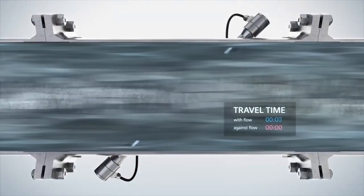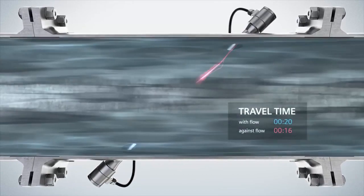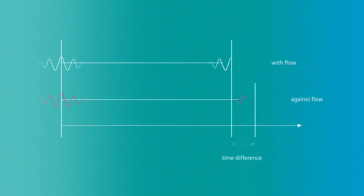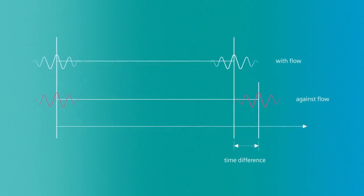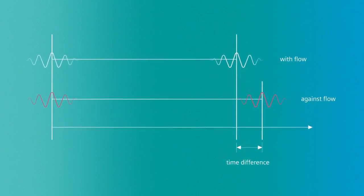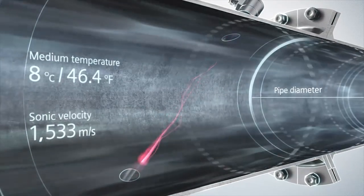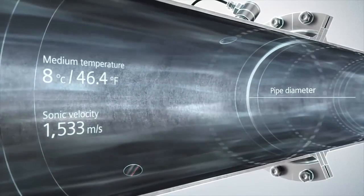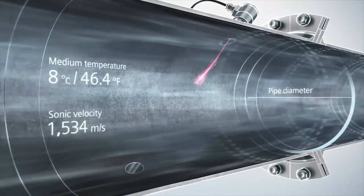When moving in the same direction as the flow, waves travel faster than waves traveling against the direction of the flow. The higher the flow velocity of the medium, the greater the difference between the two transit times. Combined with the known area inside the pipe and the measured sonic velocity and temperature of the media, it is possible to accurately measure the volume.